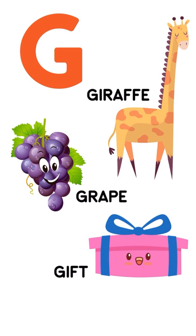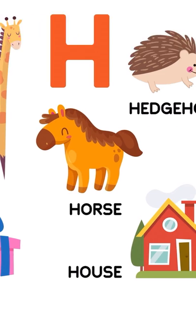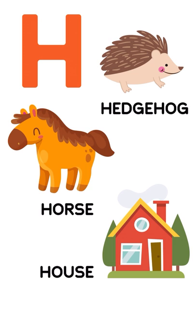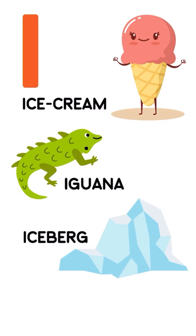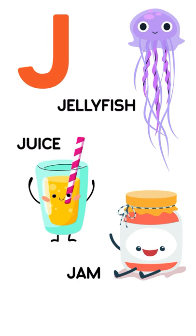G. Giraffe, Grape, Gift. H. Hedgehog, Horse, House. I. Ice cream, Iguana, Iceberg.